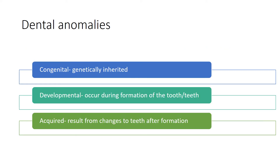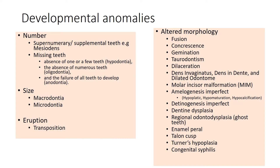Dental anomalies can be classified as congenital when they are genetically inherited, developmental when they occur during the formation of the tooth or teeth, and acquired when they result from changes to teeth after the formation of the tooth has happened. Developmental anomalies can be either anomalies in the number of teeth, for example supernumerary teeth, supplemental teeth, or missing teeth.